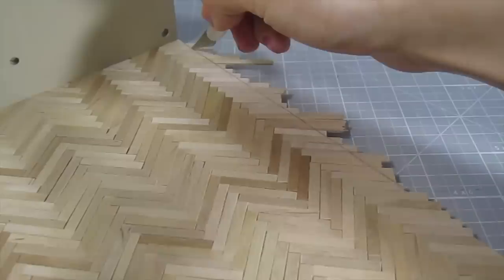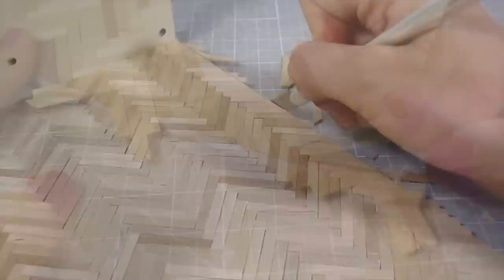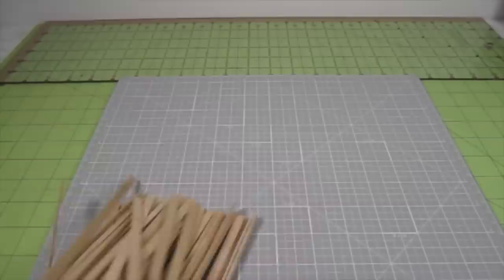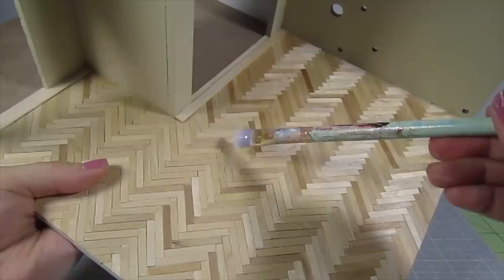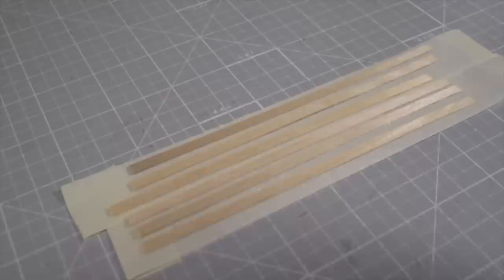Cut off any excess wood. Then I use thicker coffee stirrers to clean up all the rough edges. Lastly, I seal all the flooring with polyurethane varnish. For some simple baseboards, I paint my coffee stirrers white and glue them to each corner.